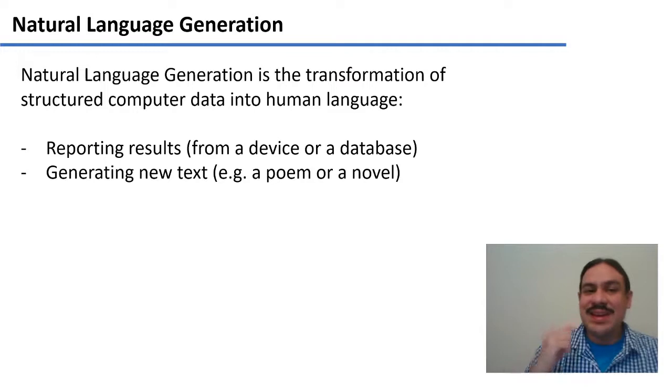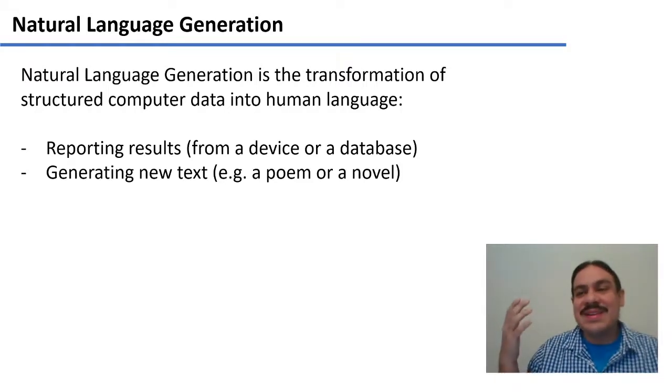A second thing is generating new text that is creative. For example, writing poems or writing a novel. Maybe it looks at a picture and from there it writes a poem. Or maybe it reads all of Shakespeare and then tries to write a new Shakespeare play. This is also a type of natural language generation.